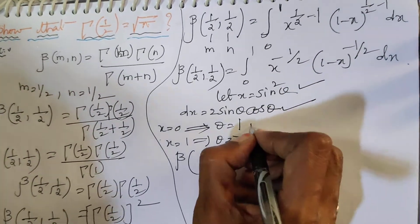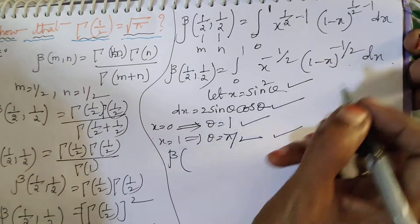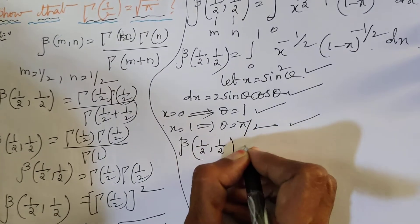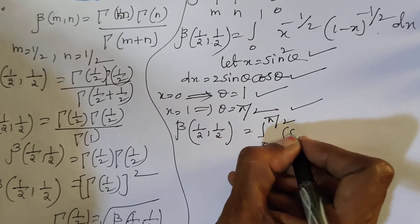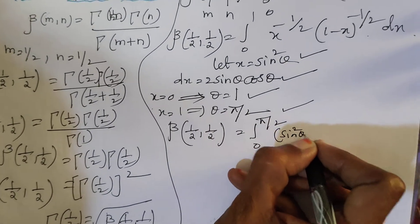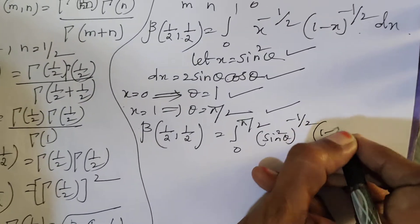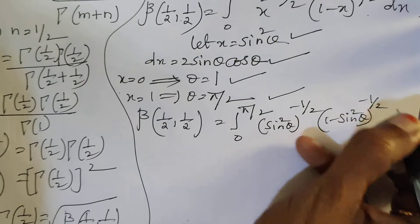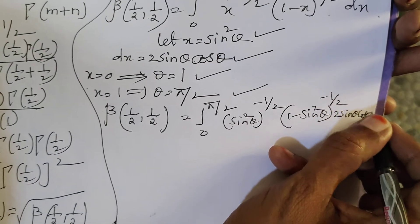Substituting into the integral, Beta(1/2, 1/2) equals the integral from 0 to π/2 of (sin²θ)^(−1/2) times (1 − sin²θ)^(−1/2) times 2 sin θ cos θ dθ.